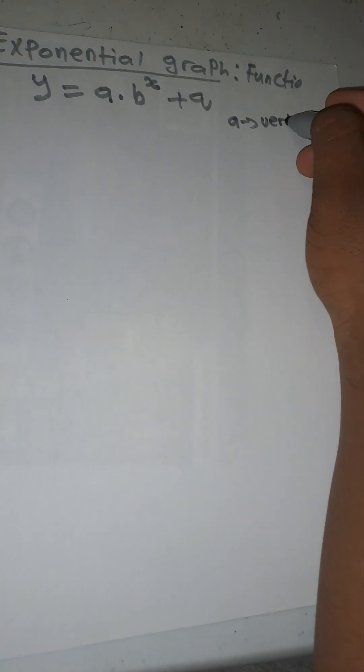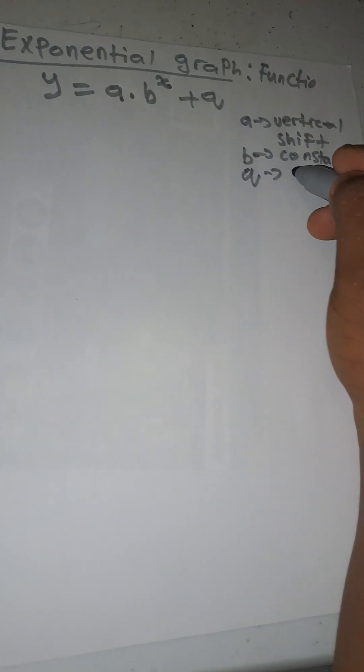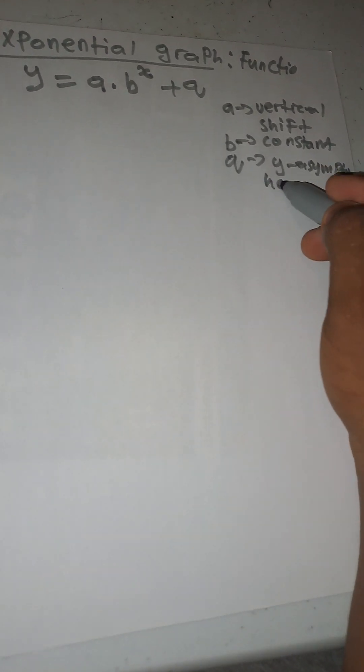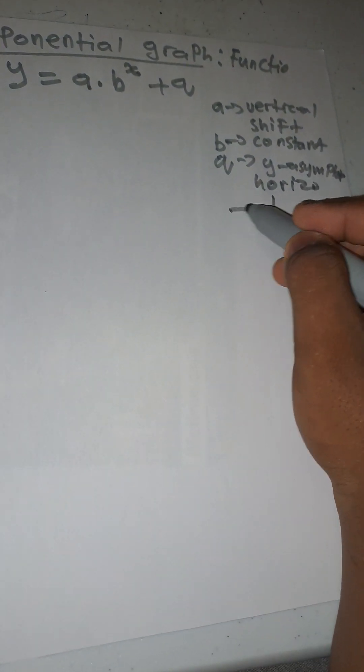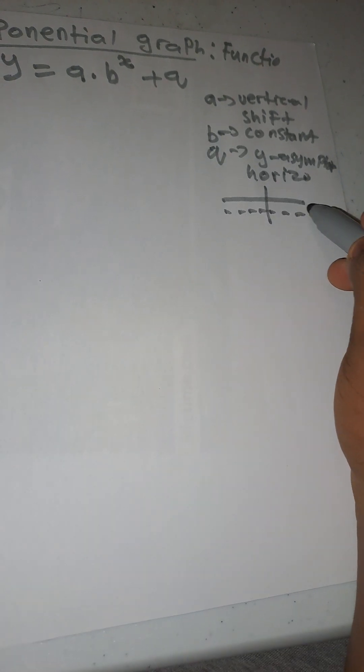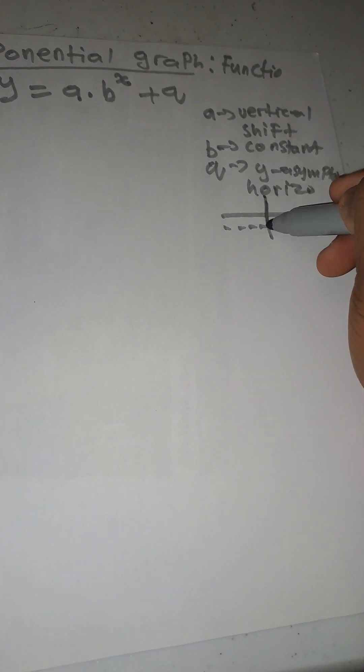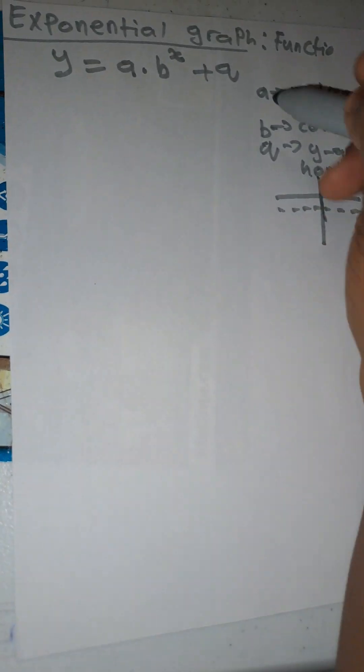In the equation, b is a constant — any number. And q is the y-asymptote, which is a horizontal line that cuts the y-axis horizontally. That's why they call it the y-asymptote: it's the line that cuts the y-axis horizontally. The value of q represents this asymptote.